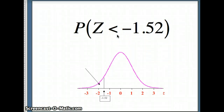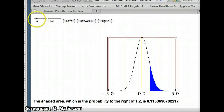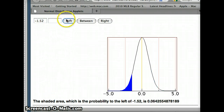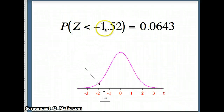Here's a fairly typical question: we want the probability Z is less than negative 1.52. That represents the small area to the left of negative 1.52. Using the applet, we put negative 1.52 in and ask for the area to the left — it gives me 0.064255, or about 0.0643. So the probability Z is less than negative 1.52 is about 0.0643 — about 6% of the graph is to the left of negative 1.52.